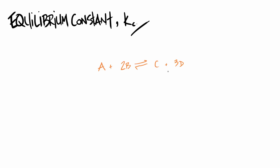We're assuming this reaction is not only reversible but has reached equilibrium. What we can do is write an expression for the equilibrium constant KC. So KC equals: concentration of C times concentration of D, divided by concentration of A times concentration of B.